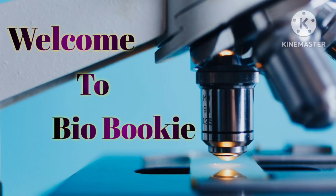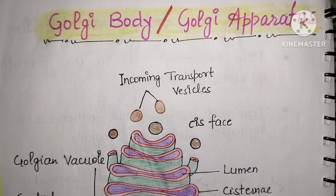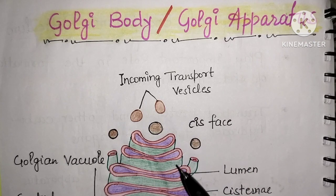Hello guys, welcome to my YouTube channel. Our topic is Golgi body or Golgi apparatus. It is an organelle which works like a factory — it receives proteins from the endoplasmic reticulum, further processes them, and transports them to their destination.